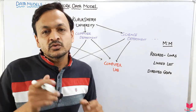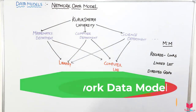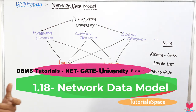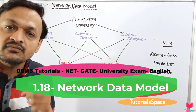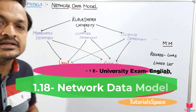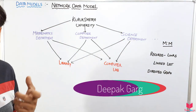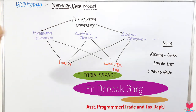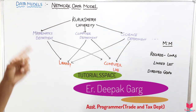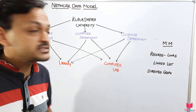Hello everyone. Today we will discuss the network data model. We have already discussed the hierarchical data model, which has one disadvantage: it cannot represent the many-to-many relationship between entities. The network data model has the advantage that it can also represent many-to-many relationships.